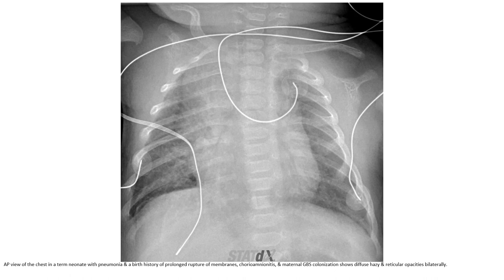Another case. This is the chest of a term neonate with pneumonia and a birth history of prolonged rupture of membranes, chorioamnionitis, and maternal group B strep colonization. Diffuse acinar and reticular opacities, bilateral.